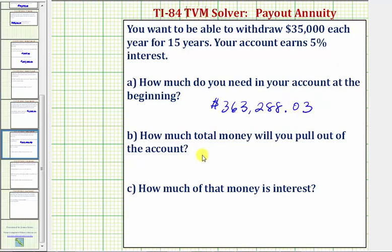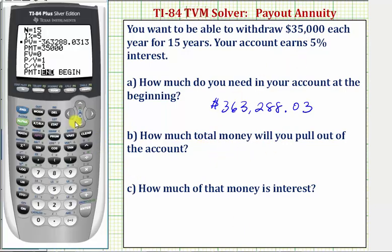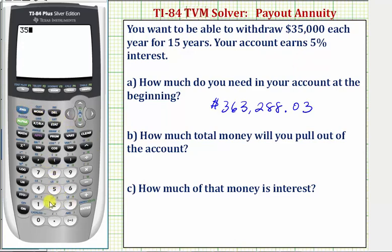For Part B, how much total money will you pull out of the account? That would be $35,000 a year for 15 years. So the total money pulled out of the account would be $35,000 times 15. Going back to the home screen by pressing Second, Mode: 35,000 times 15 is equal to $525,000.